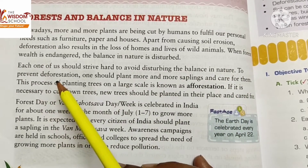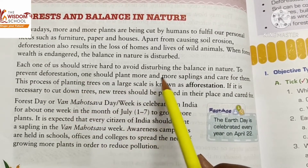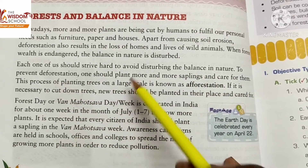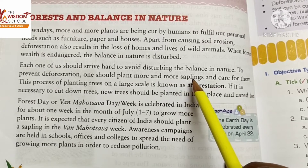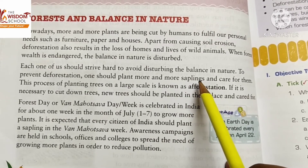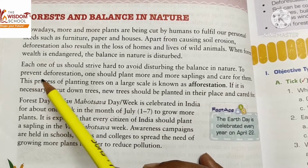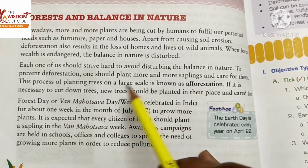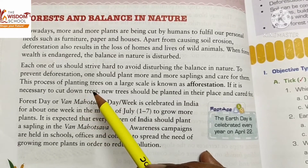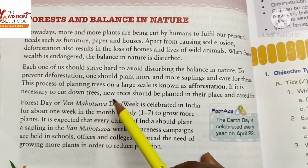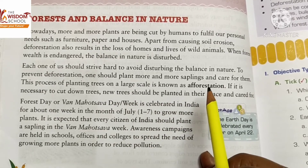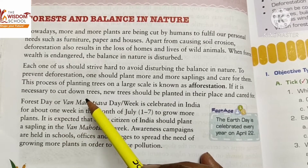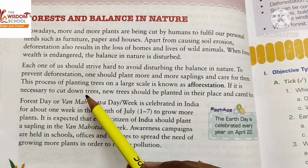To prevent deforestation, one should plant more and more saplings and care for them. This process of planting trees on a large scale is known as afforestation.